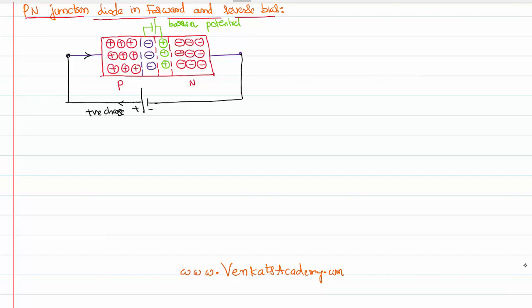The positive charges come up to the junction and immediately experience the positive charges there. The positive charges from the battery, with energy, will push the positive charges of the P type material forward. Simultaneously, negative charges from the battery are pushed forward towards the depletion layer and the barrier potential. So when you supply sufficient potential — that is, the battery voltage is enough to overcome the barrier potential — the charges can flow.